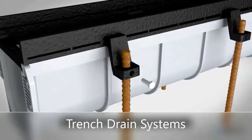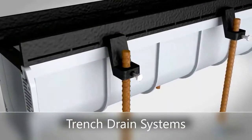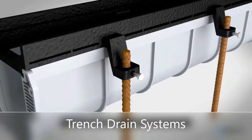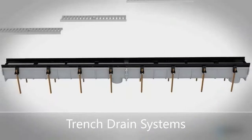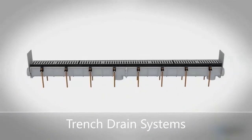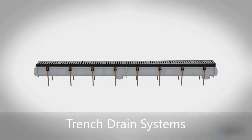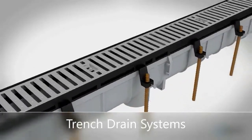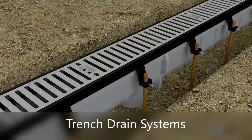Trench drains can come pre-sloped or neutral. A slope gives the drain an added pitch towards the outlet. Drains can be made out of polymers like HDPE or be concrete-based.